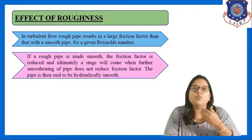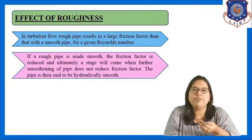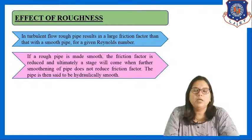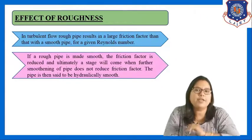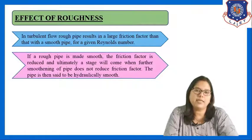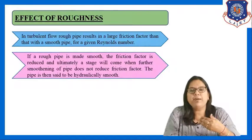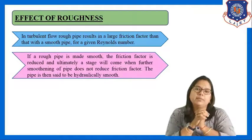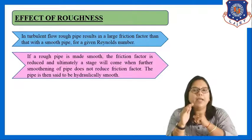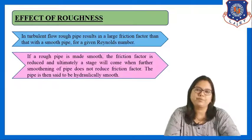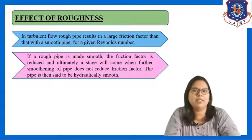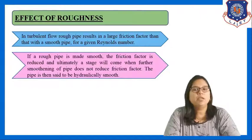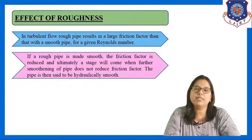If a rough pipe is made smooth, the friction factor is reduced. But ultimately a stage will come when further smoothening of the pipe does not reduce the friction factor. That condition is known as hydraulically smooth — the point after which further smoothening does not reduce the friction factor.